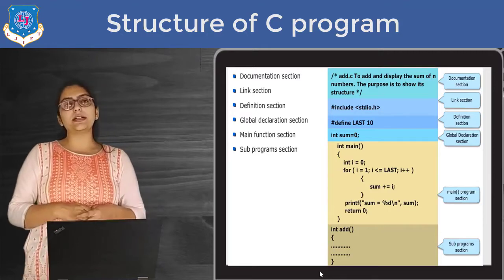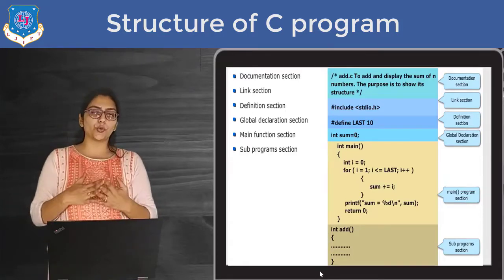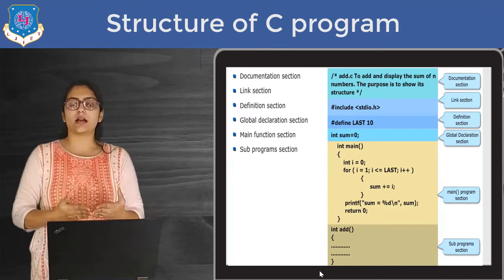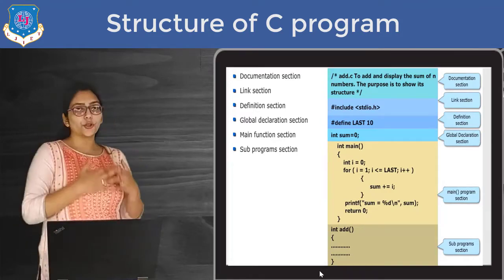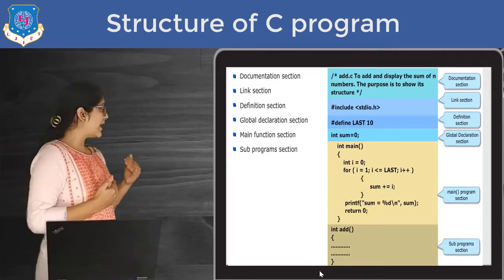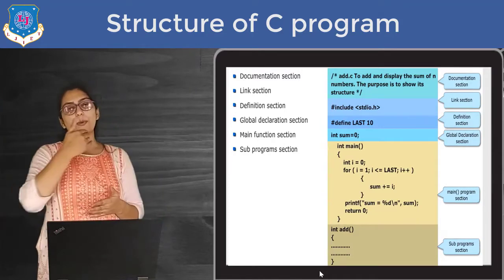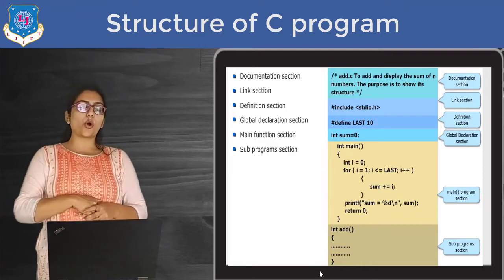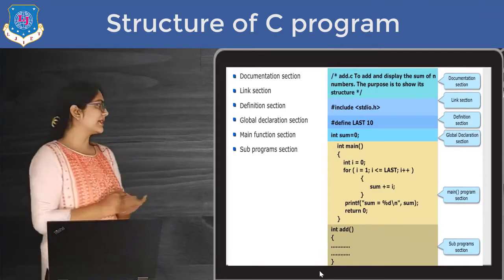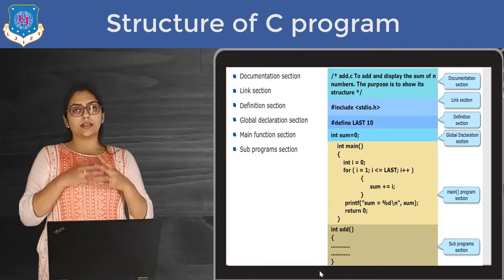Then you can see the global declaration section. Till now in any program I have just used declaration inside main - like int a, int b, int sum, int sub etc. But suppose you want one variable to be accessed by the entire program. Then you can declare it outside main also. There are some rules if you want to declare it outside - that is called static and dynamic scoping, which will be covered when we cover functions. Just understand that you can declare something outside of the main function, and that is called the global declaration section.